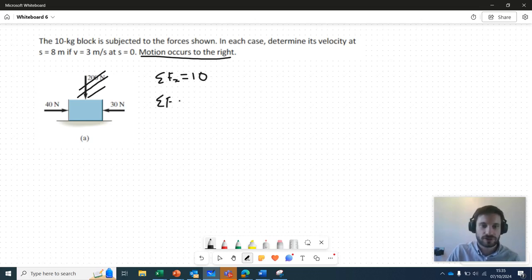We're going to say that the sum of the forces in the x direction are equal to 10. 40 minus 30 is 10. We understand that the sum of the forces in a given direction are equal to mass times acceleration in that direction. So we can say that 10 equals the mass, which is 10 kilos, times acceleration. So 10 equals 10A, therefore A equals 1.